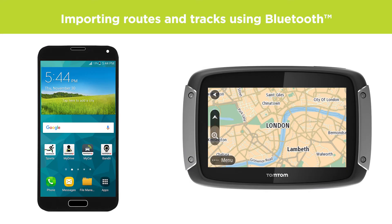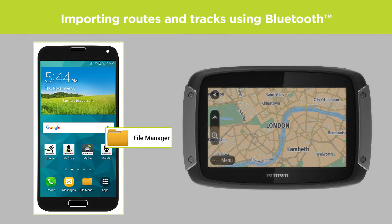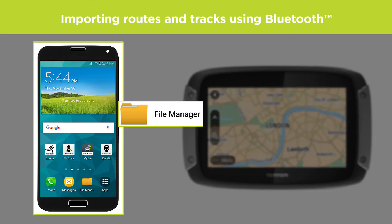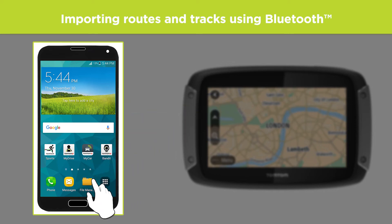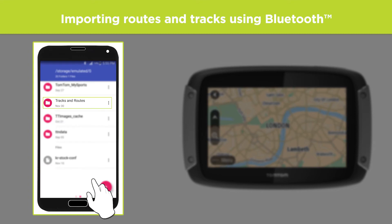On the device, use a File Manager app to find the track or route files. Select the files, and then share them using Bluetooth.